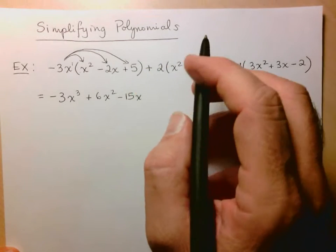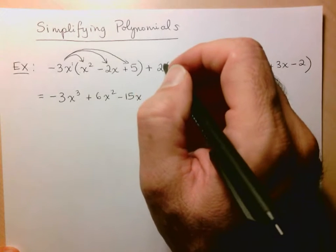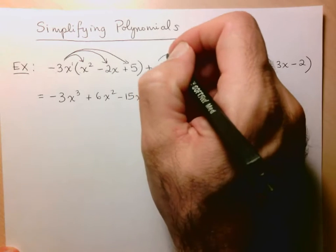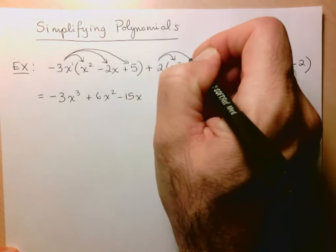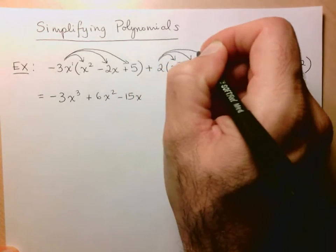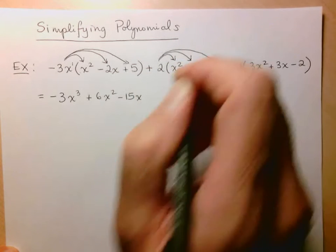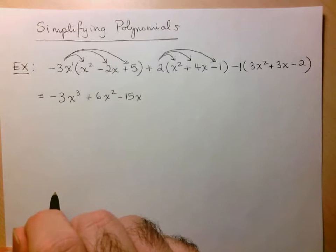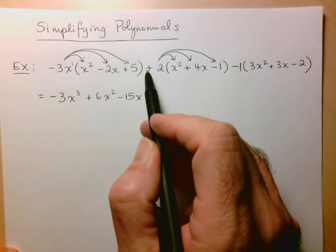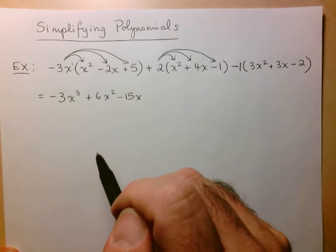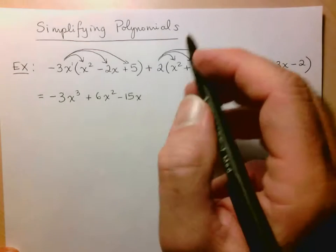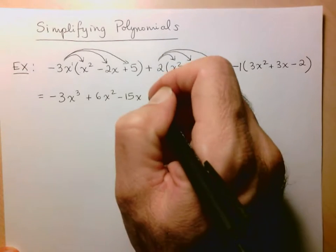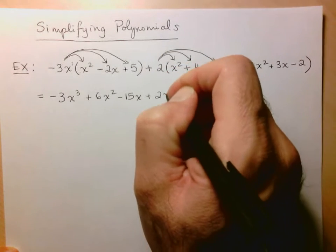Now we do the second multiplication, which again is a number times a polynomial, so I use again the distributive property. Now at this point here, I just want to remind everyone of what sign we're always using when we're considering a term. We always use a sign that comes to the left of the number or the variable.